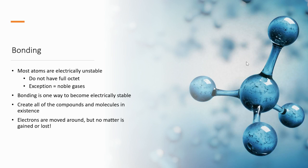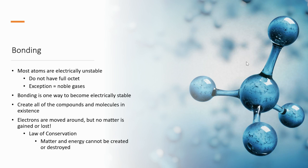Electrons are moved around, but matter is never gained or lost. So we adhere to the law of conservation. Remember that matter and energy cannot be created or destroyed. So even in the bonds, we're shifting electrons around sometimes, but the electrons don't go away.